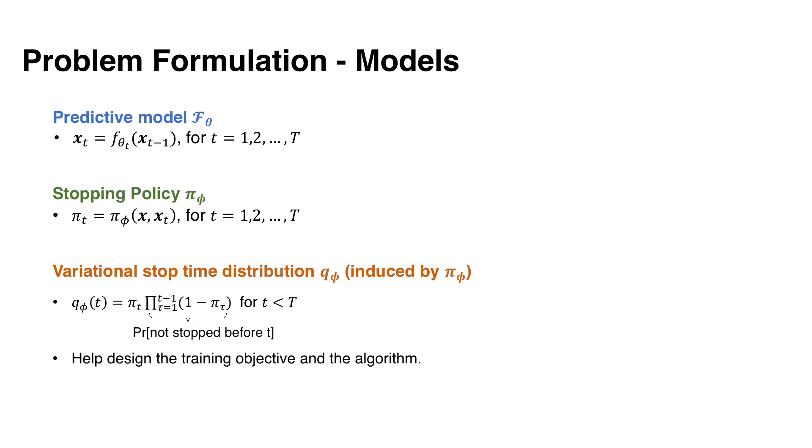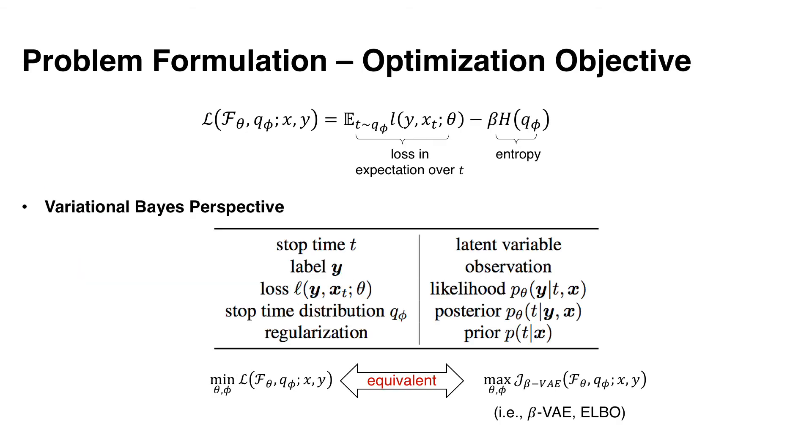The predictive model f_theta is a typical T-layer deep model that generates a sequence of embeddings x_1 to x_T. The stopping policy pi_phi observes the input x and the t-th layer output and then determines whether to stop. As mentioned before, the q_phi is the variational stop-time distribution induced by pi. The concrete definition is given here. This product is the probability of not stopped before t. Q_phi can help us design the training objective and also the algorithm. Next, we present the joint optimization objective. It is defined as the loss in expectation over t, where this expectation is taken over the stop-time distribution q_phi. And there is an entropy term that regularizes the distribution. Beta is the coefficient.